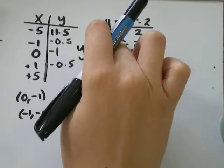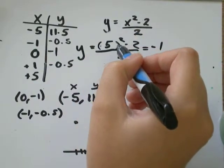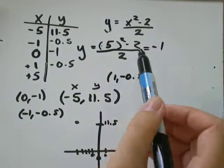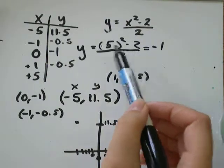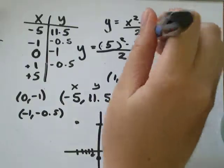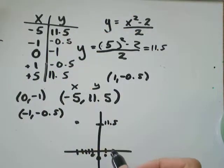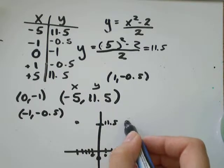And let's do positive 5. Positive 5 squared would be 5 times 5. 25 minus 2 would be 23. Divided by 2, I would be at 11.5. So, I'll go to positive 5 and positive 11.5.